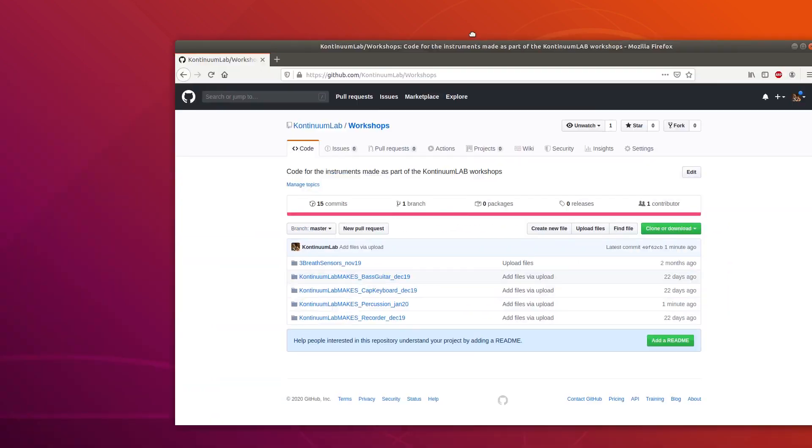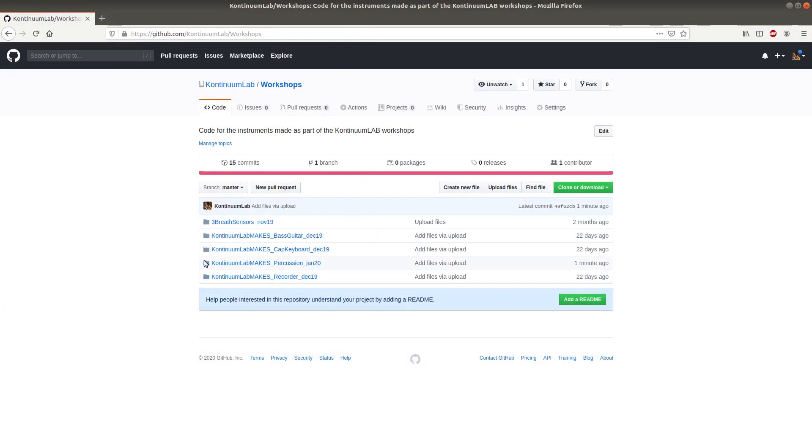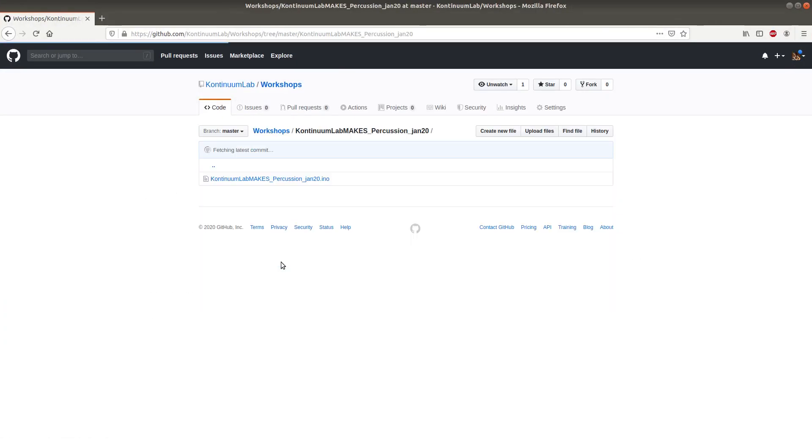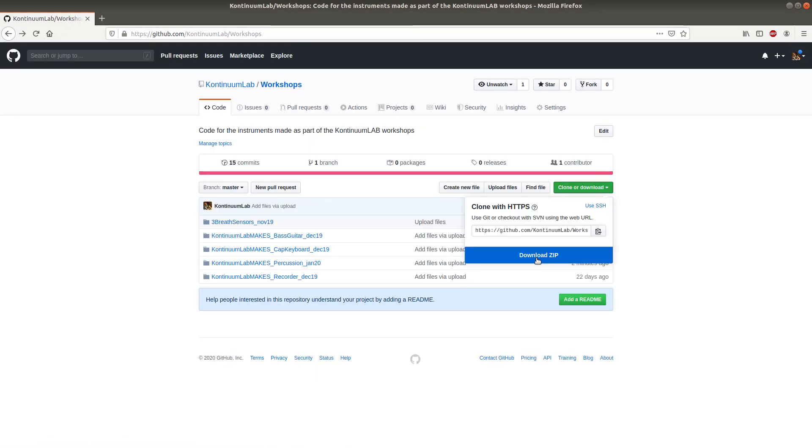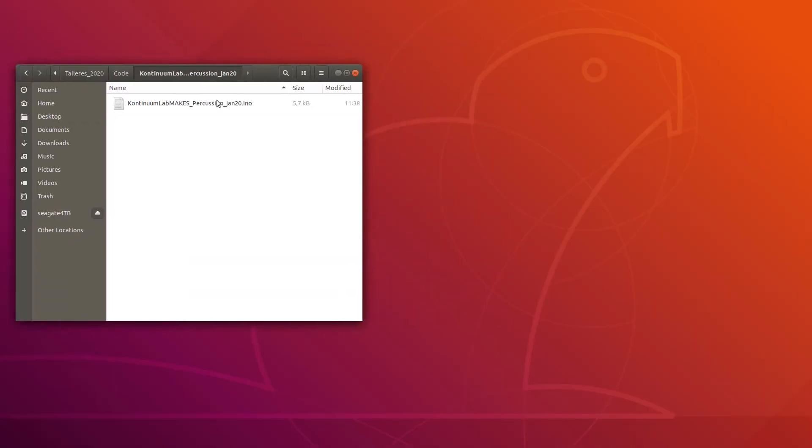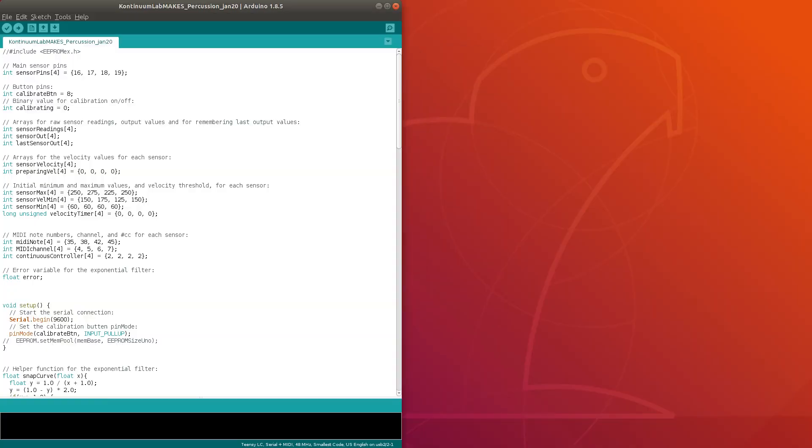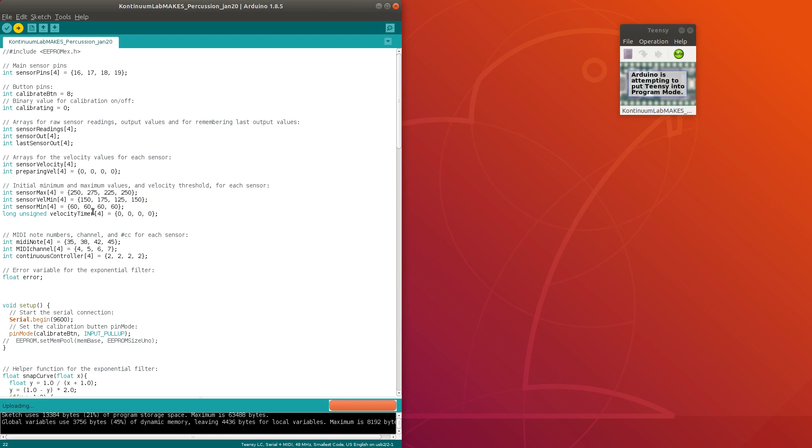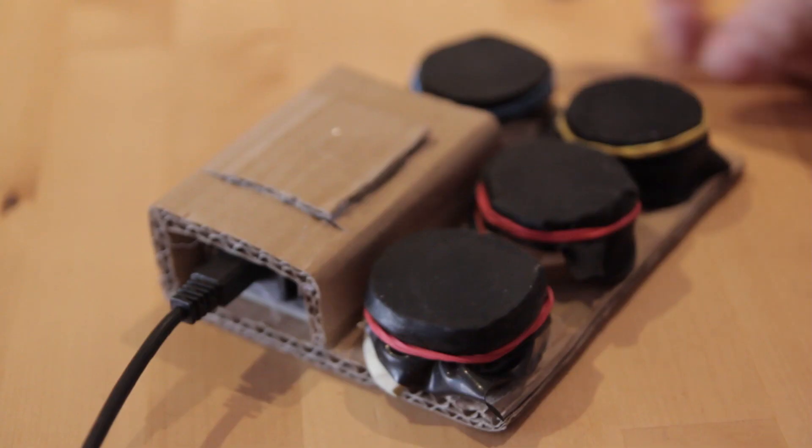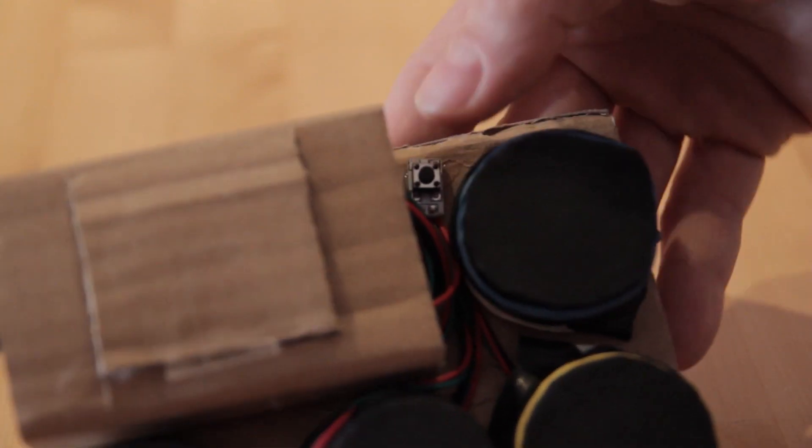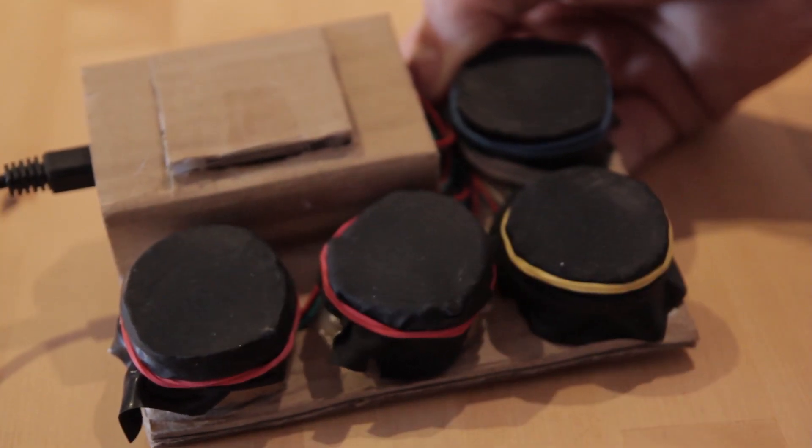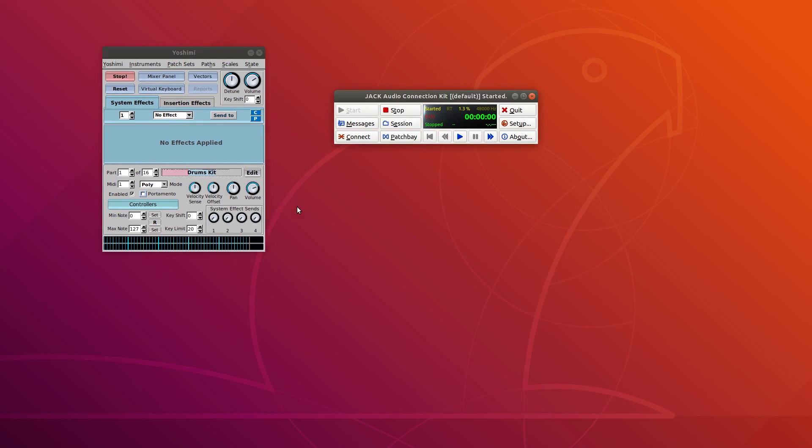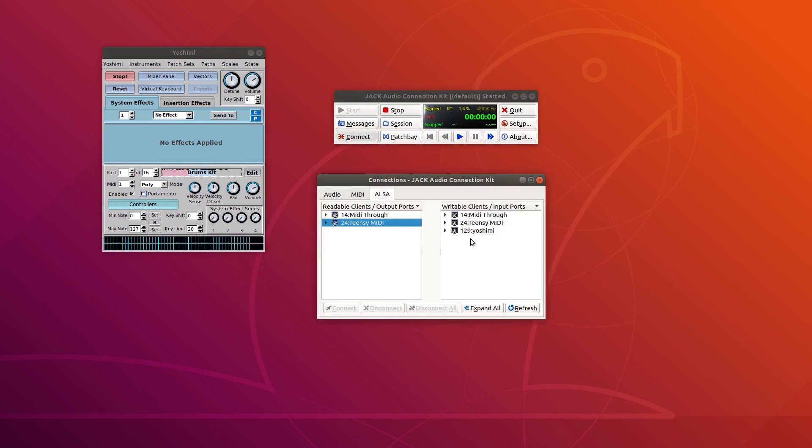The code for the new percussion is available on the Continuum Lab GitHub page. It's similar to previous percussion sketches, but I have improved a few things and of course added a fourth drum in the code. I'll upload the code to the instrument using Arduino, and then before I open up the software synth, I'll quickly calibrate the drums by pressing down the calibration button and then activating each drum. And now I can open up the Yoshimi software synthesizer and then connect the instrument through jack and I'm ready to play.